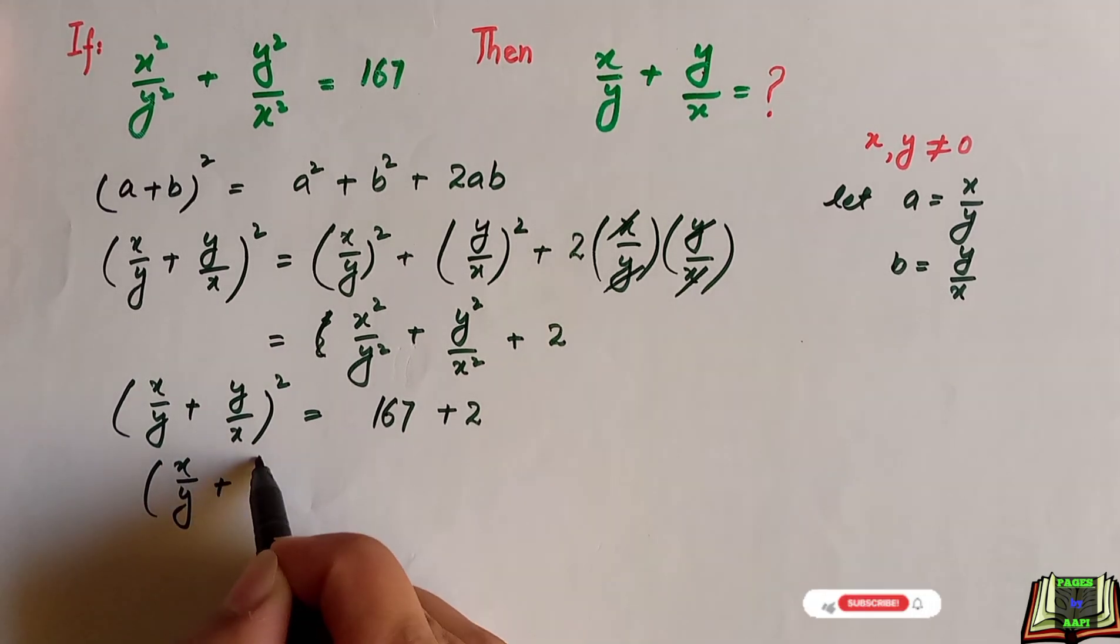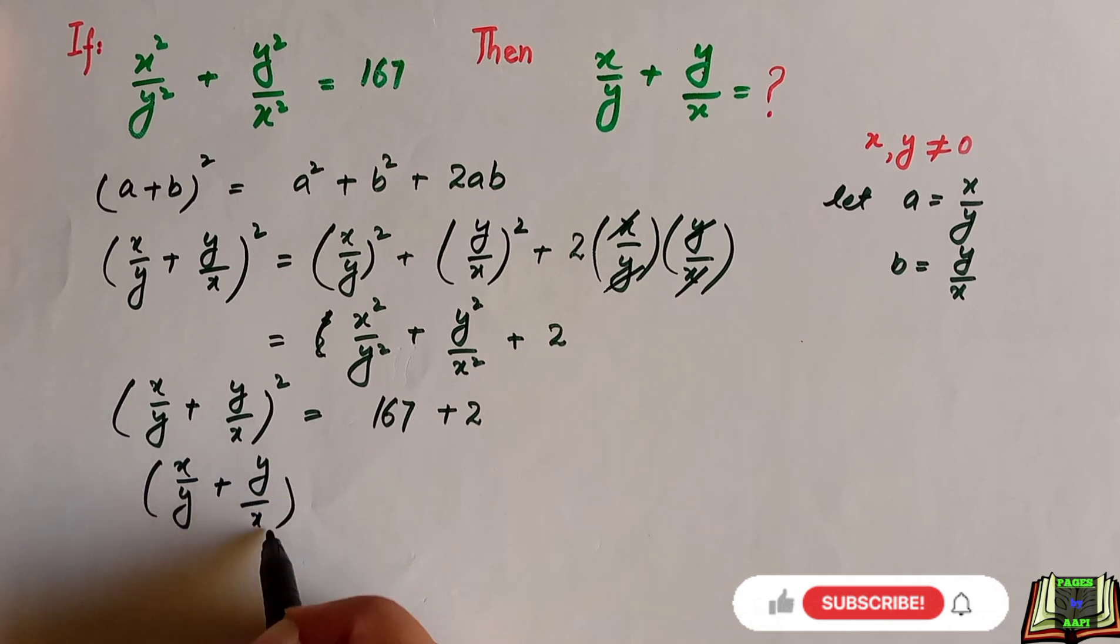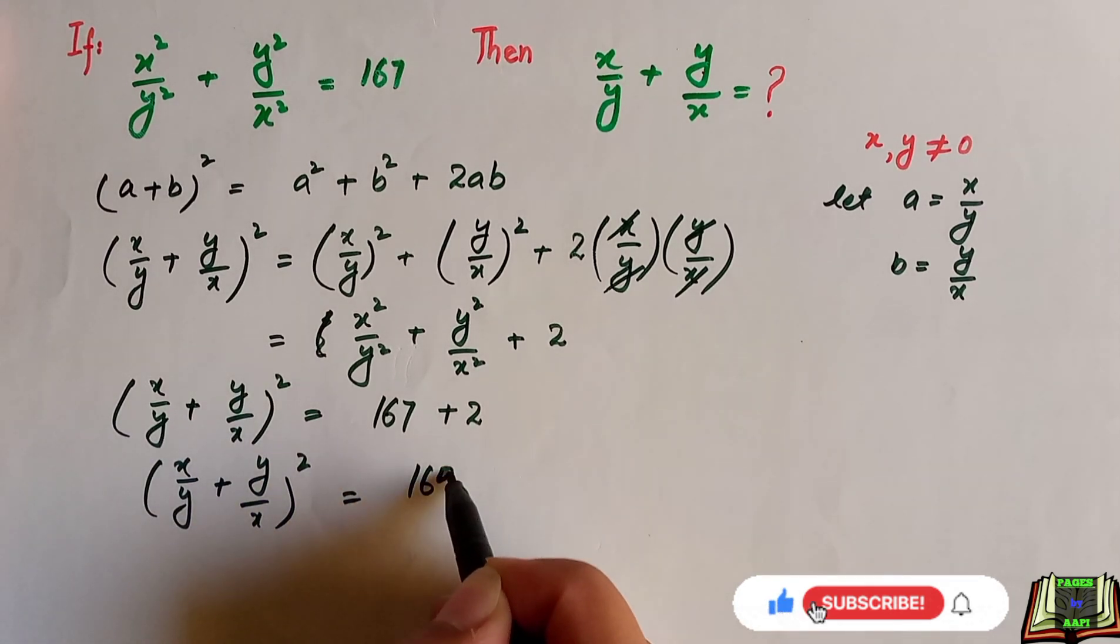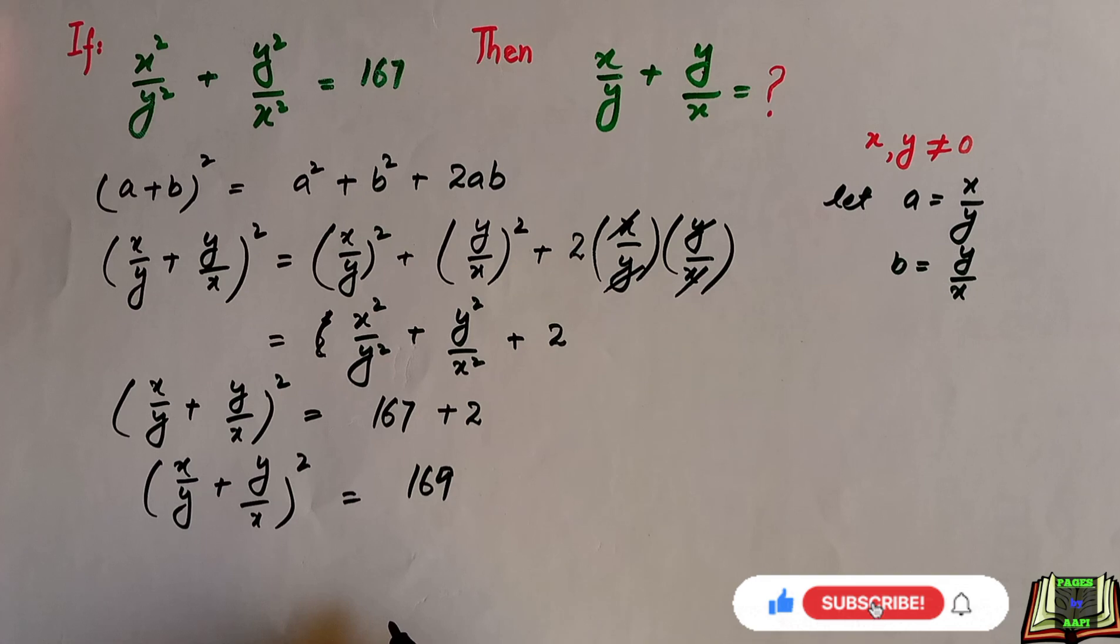x divided by y plus y divided by x whole square, this will be written again as it is, and on the right hand side this is equal to 169.